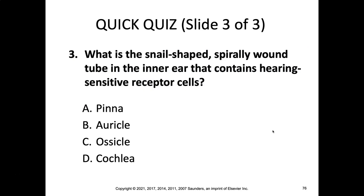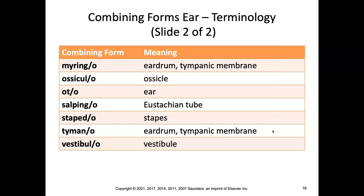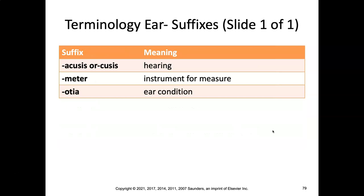Pop quiz: What is the snail-shaped spirally wound tube in the inner ear that contains the hearing-sensitive receptor cells? Think about which part of the ear is snail-shaped. Combining forms for the ear: accuso, audio, audito, oro, auriculo, cochleo, mastoido, moringo, ossiculo, odo, salpingo, stapedo, timpano, vestibulo. Suffixes: acusis or cusis — a new one meaning hearing — plus meter and odia.